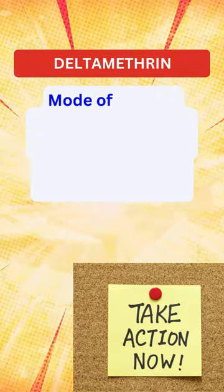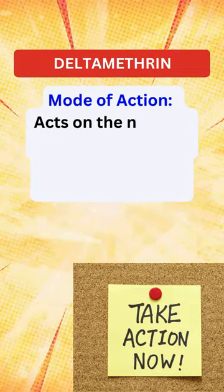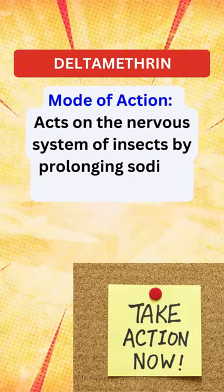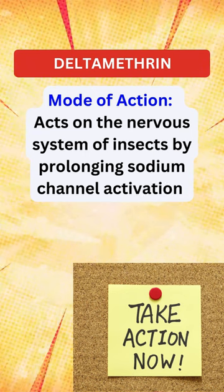Mechanism of action. Deltamethrin operates on the nervous system of insects by extending sodium channel activation.